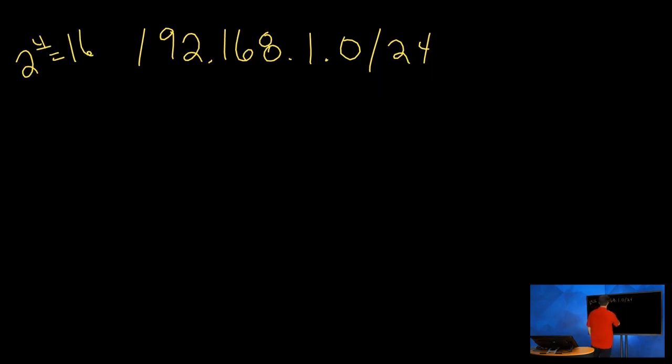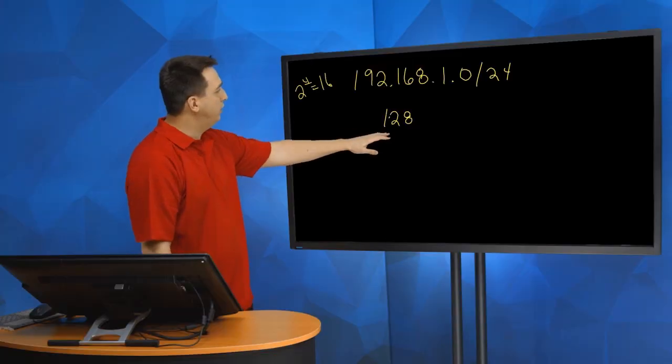Our new subnet mask ends up being a /28. I'm going to put the /28 here, so there's our new subnet mask /28 because borrowing 4 bits on top of 24, 24 plus 4 is 28.